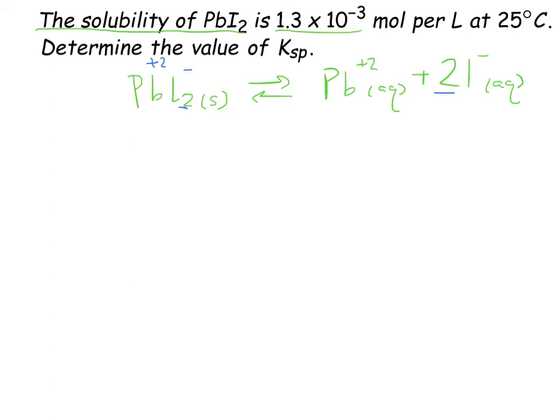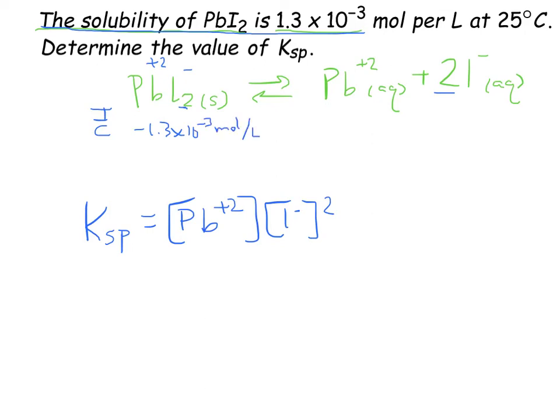So, then what we need is a Ksp expression. We have Ksp equals Pb plus 2 times I minus squared. And then we're going to have to have something to plug into that. So, look back again at the question. The solubility of PbI2 is 1.3 times 10 to the negative 3rd moles per liter. That means that however much PbI2 we started with, I don't know what the initial is, but the change is going to be 1.3 times 10 to the negative 3rd moles per liter. That's how much PbI2 will dissolve.